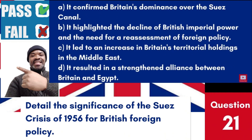Question 21: Detail the significance of the Suez Crisis of 1956 for British foreign policy. a. It confirmed Britain's dominance over the Suez Canal. b. It highlighted the decline of British imperial power and the need for a reassessment of foreign policy. Answer: b. The Suez Crisis marked a pivotal moment in British foreign policy, illustrating the limitations of Britain's power without the support of key allies like the United States.